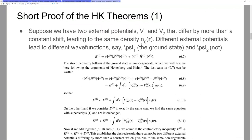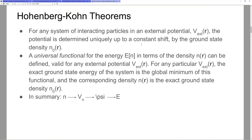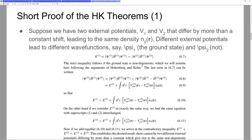Let us pretend that these different external potentials lead to the same density. If they lead to the same density, then you're going to have two different ground state wave functions. We start from the density, get the external potential, go from the external potential to the many-body wave function, and then from the many-body wave function to the total energy. Once we have the total energy, we have relevant observables — almost every single relevant observable is some form of a first, second, or nth derivative of energy.